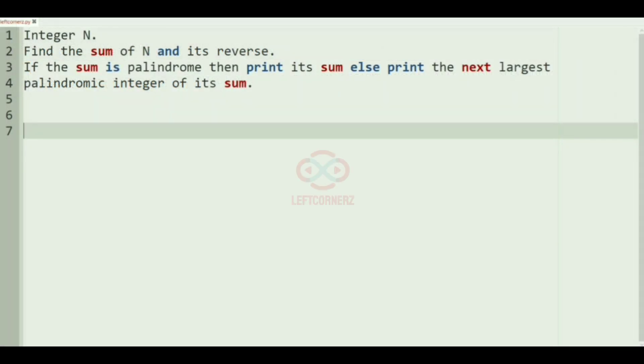First we'll understand our question. The program has to accept the integer N as the input and find the sum of N and its reverse. If the sum is palindrome, then the program has to print its sum, else print the next largest palindromic integer of its sum. Now we'll take our first case.